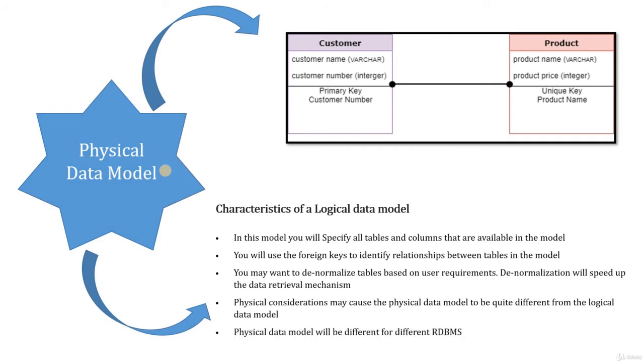Physical data model will be different for different RDBMS. I'll help you explaining this particular point with an example. You know about RDBMS systems like Oracle and SQL. SQL uses the primary and the foreign keys, whereas Netezza does not use. Netezza is another tool which is used as a data warehouse tool. You may want to generate the table structure specific to that particular RDBMS. The table structure like the primary key, foreign key constraints differ from one RDBMS to the other.